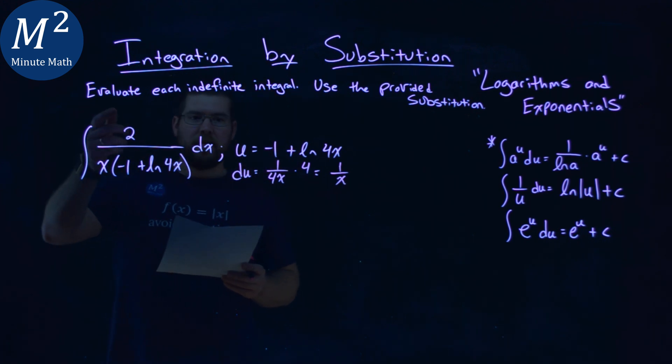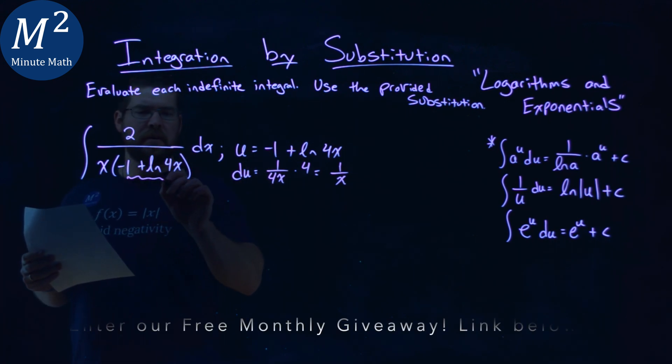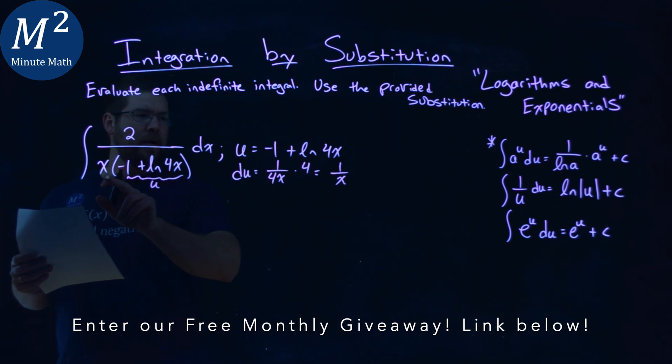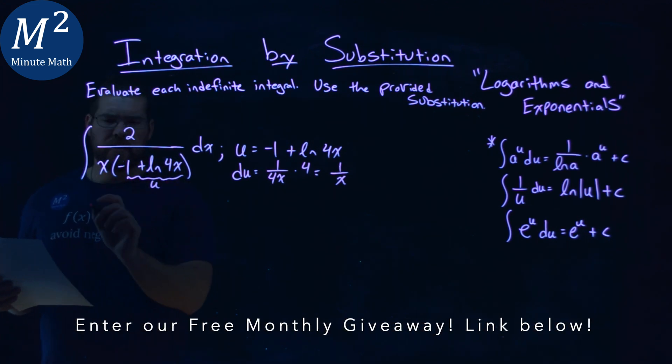So now we want to rewrite this in terms of our u values. Notice the u value is just right here in the denominator. We have the 1 over x, great, that's right there, that's our du, but that 2 is pesky. But I can just pull it to the outside of the integral.